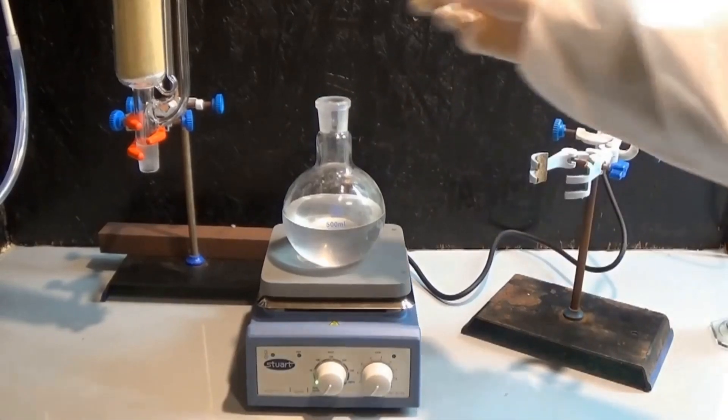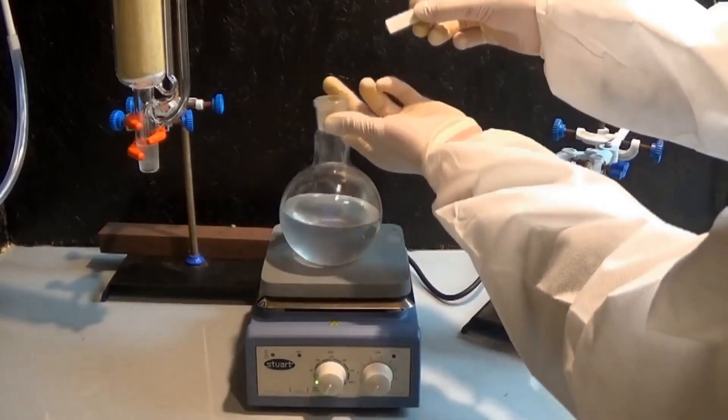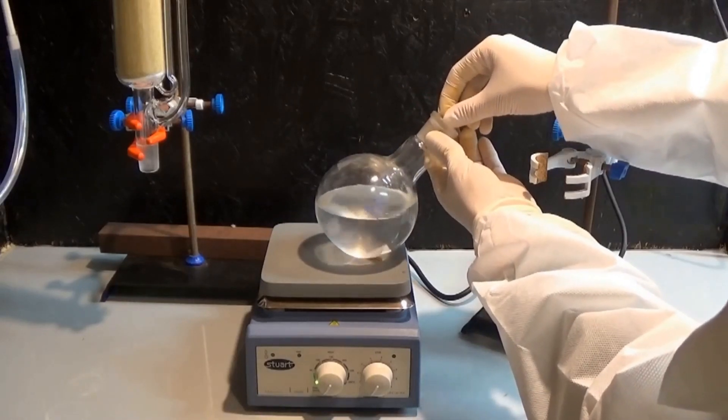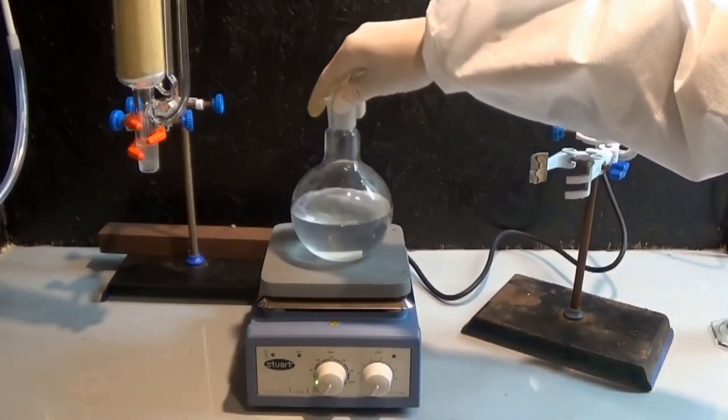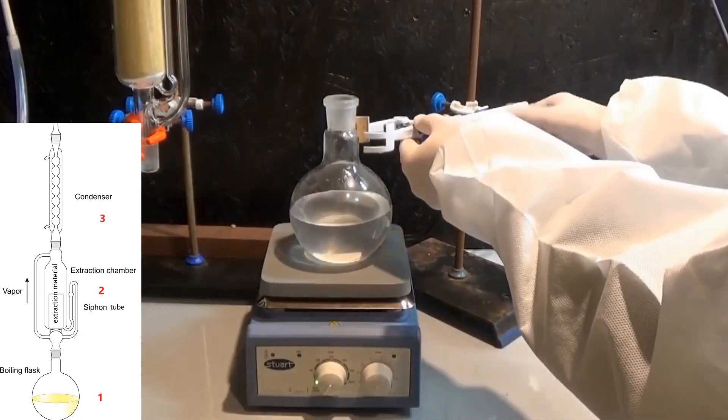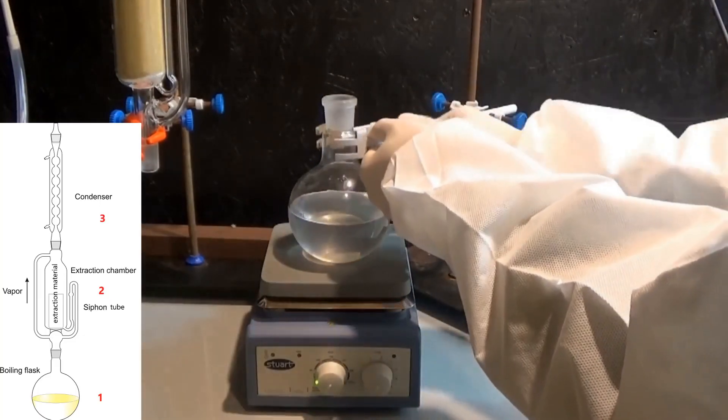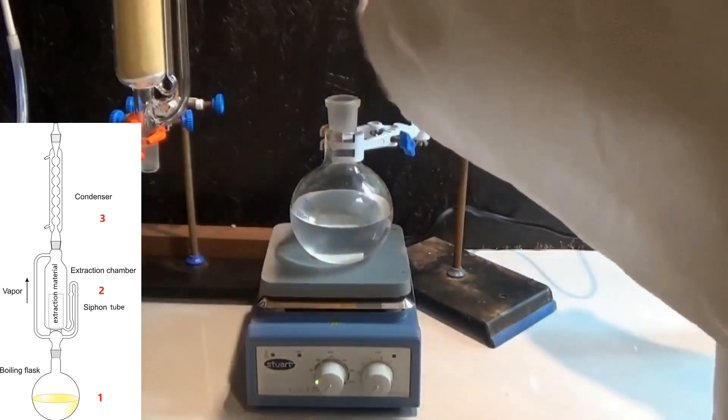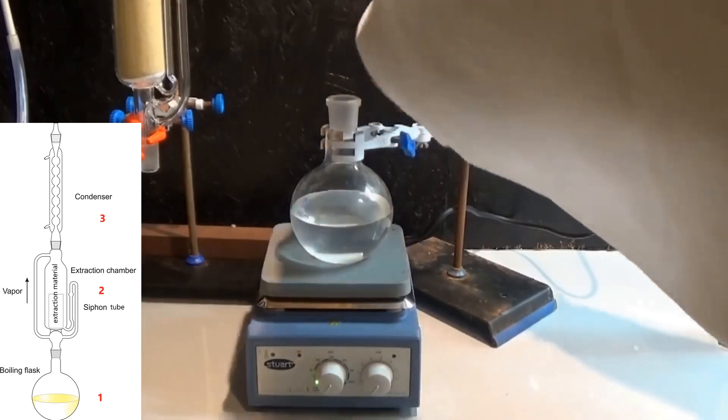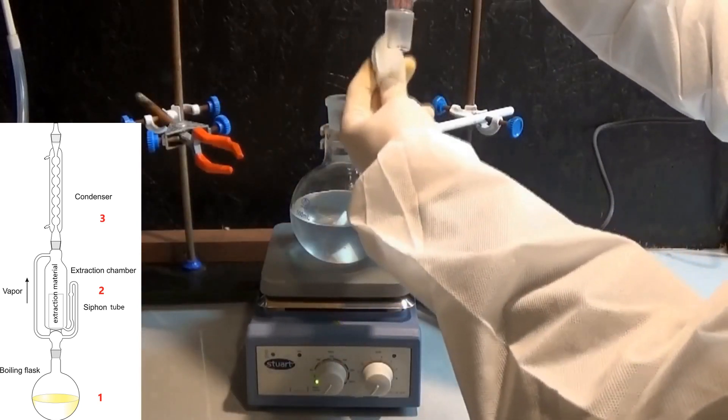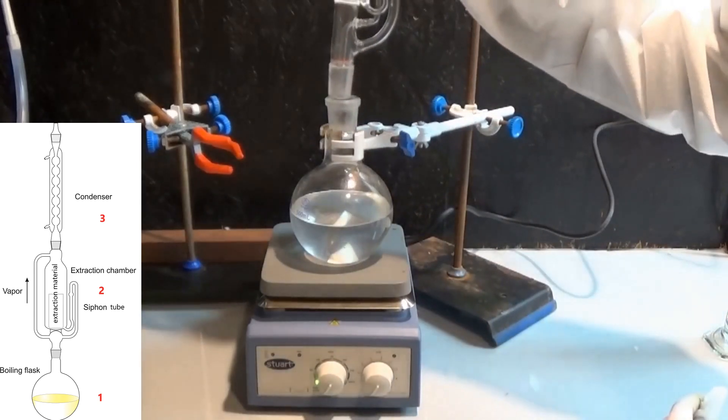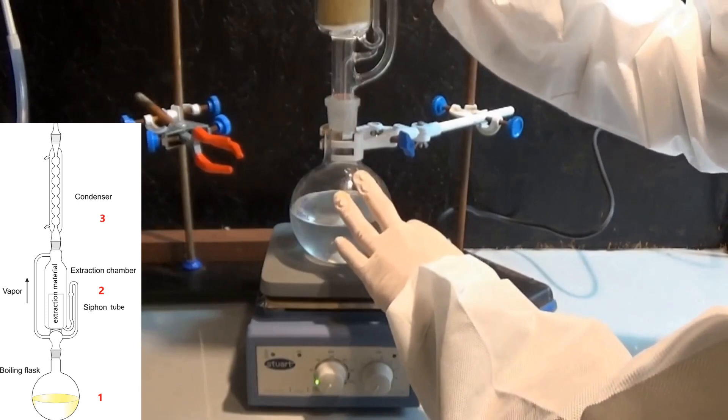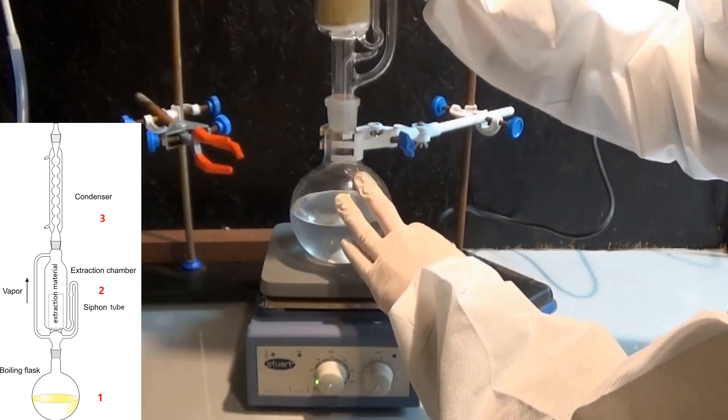So now it's time to look at how a Soxhlet extractor works. The Soxhlet extractor is divided into three parts with different functions. The first part is the boiling flask. In the boiling flask, hence the name, the solvent is brought to a boil and the solvent vapor travels upwards. The hot solvent vapor travels through the vapor tube into the second part, which is the extraction unit. There it travels up even further until it reaches the third and final part, which is the condenser.